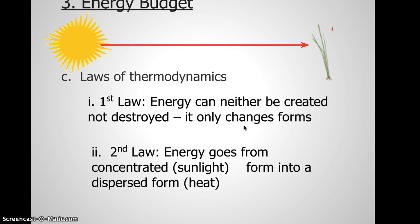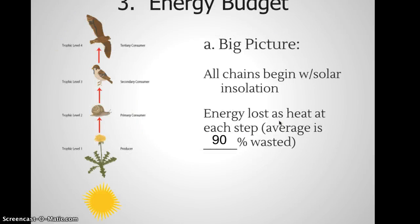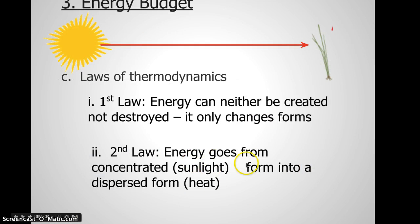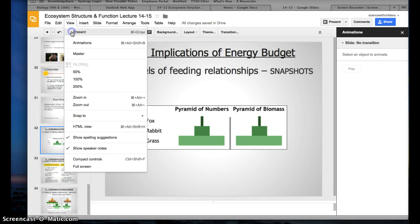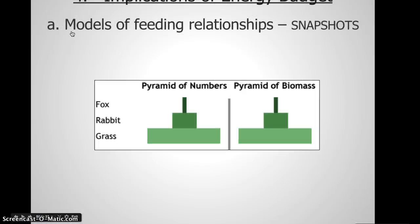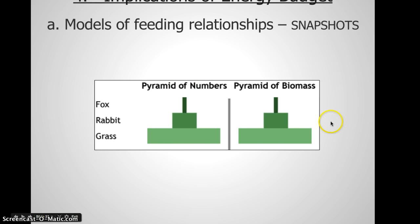Some energy is given off in waste, and the amount depends on what kind of organism you are and how you're adapted. The second law of thermodynamics describes how energy goes from concentrated sunlight into dispersed heat, meaning there's going to be more disorder as we move along from that really concentrated energy. Now let's quickly talk about some ways we can see these feeding relationships in nature. We can collect organisms and look at this loss of energy by graphing them in a pyramid of numbers or a pyramid of biomass — but remember, these are just snapshots in time.